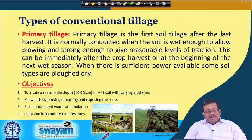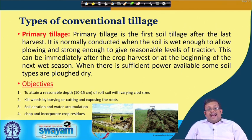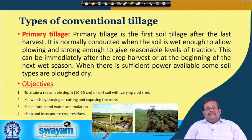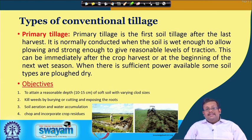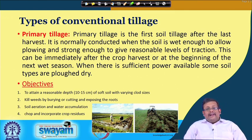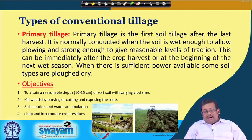The first type of conventional tillage is called primary tillage. Primary tillage is the first soil tillage after the last harvest and is normally conducted when the soil is wet enough to allow ploughing and strong enough to give a reasonable level of traction. This primary tillage can occur immediately after the crop harvest or at the beginning of the next crop season. When there is sufficient power available, some soil types are ploughed in dry condition also.